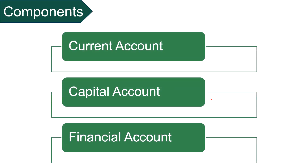There are majorly three components of balance of payment: current account, capital account and financial account. The current account covers trade in goods and services, income like wages and investments, and transfers like foreign aid. The current account is useful for monitoring the flow of goods and services, i.e. inflow or outflow.